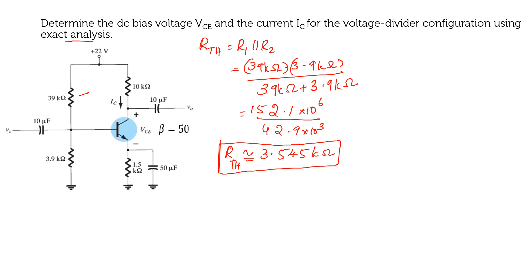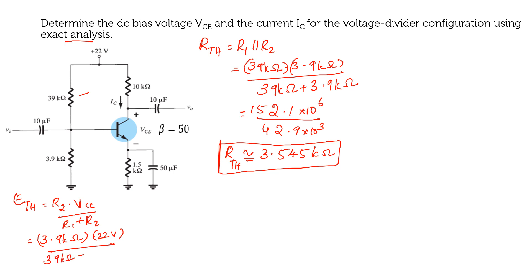Now calculate Eth using the voltage divider rule: Eth equals R2 times Vcc divided by R1 plus R2. R2 is 3.9 kΩ, Vcc is 22 V, divided by 39 kΩ plus 3.9 kΩ. So 3.9 times 22 gives approximately 85.8, then 85.8×10³ divided by 42.9×10³, which gives Eth approximately equal to 2 V.